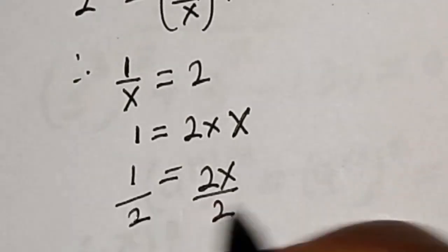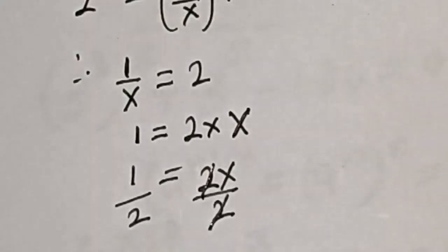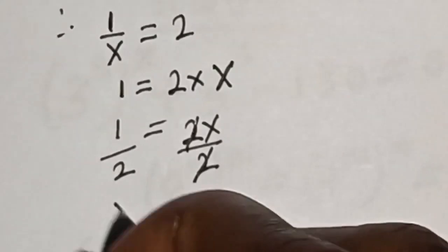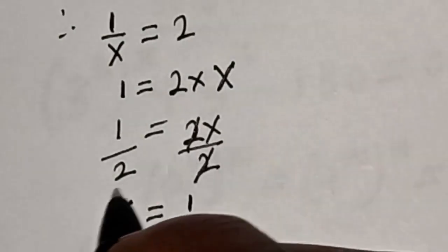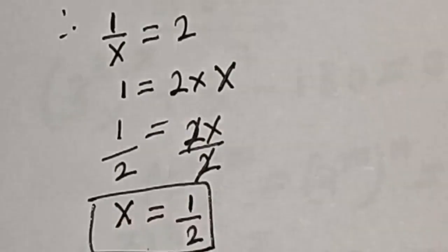Divided by 2, this will cancel. x is equal to 1 over 2, and this is the final answer.